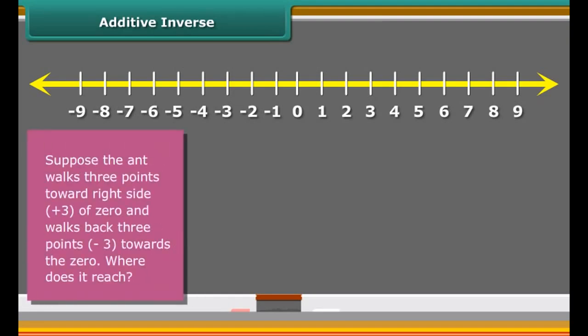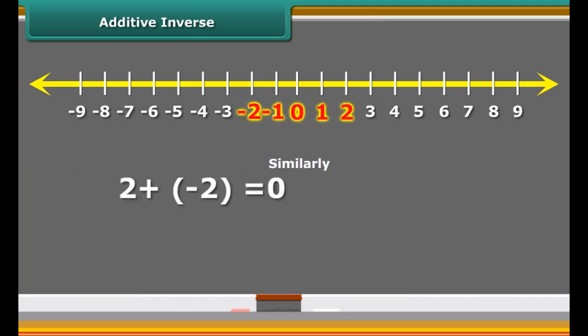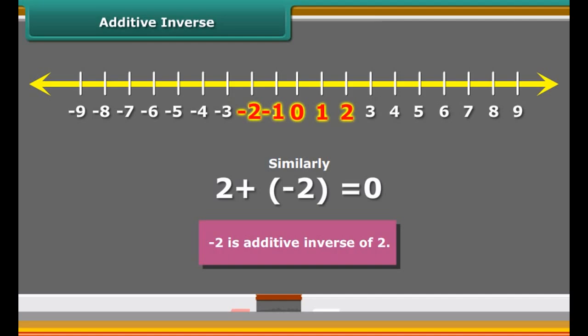If the same ant moves six points left and then four points to the right, then where will it be? It will be at minus 6 plus 4 equals minus 2, that is the second point to the left of 0.